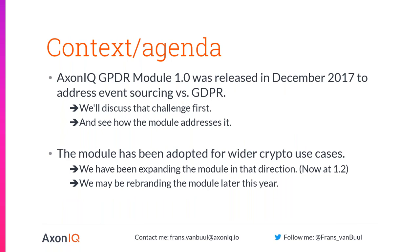A little bit of context and the agenda for today. The Exxon GDPR module version one was released last year in December, and it specifically addresses the topic of reconciling event sourcing — which is used by most Exxon framework users — with GDPR. We'll discuss what that challenge is and how the module addresses it. We've also seen the module being used for wider cryptographic use cases, both related to erasure and non-erasure cases. We're currently at version 1.2, released a couple of weeks ago, and we may be rebranding this module later on to reflect that it's not just about GDPR. We'll start by considering the GDPR use case.